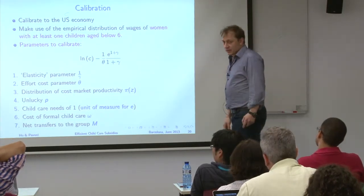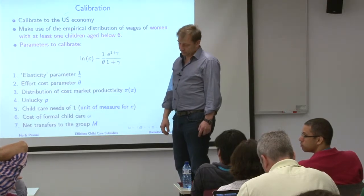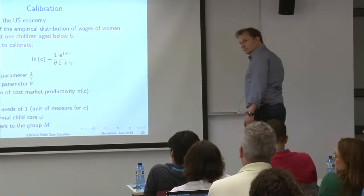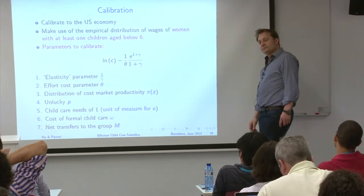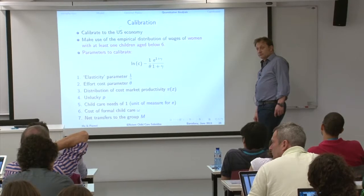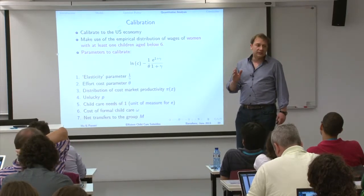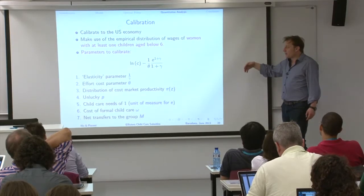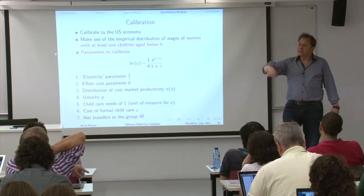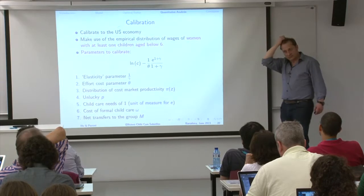A question arises about optimality: the definition of the optimal scheme goes together with an optimal tax rate, but in reality the tax rate may not be optimal — marginal tax rates for some people may be very high. This suggests a third-best exercise where the income tax is fixed and we ask what the optimal subsidies are. I didn't do the third-best exercise, but I can do it. I think it would be more interesting and I will do it.